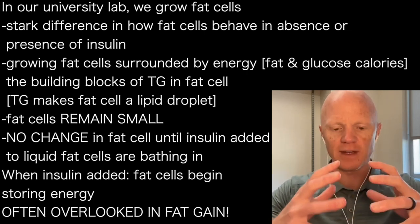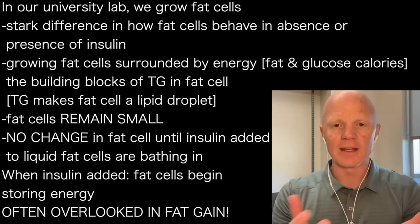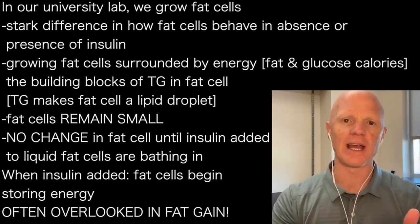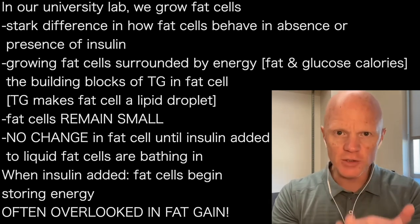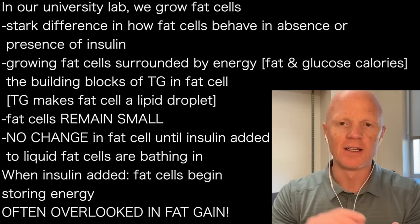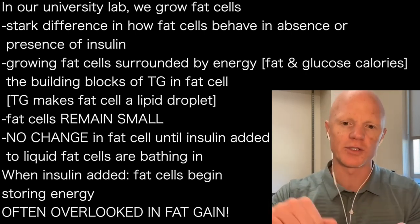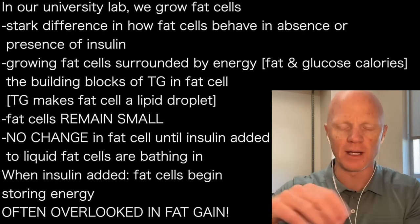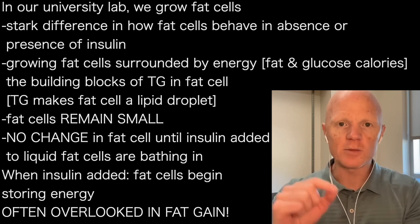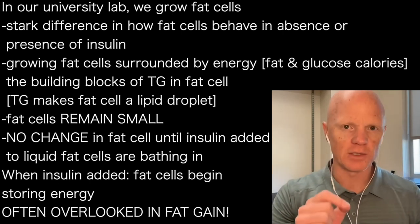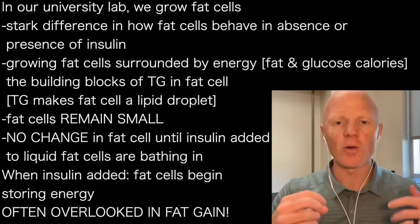The triglycerides give the fat cell its big fat blob, or what we call a lipid droplet. The fat cells are surrounded by an abundance of energy, and yet they remain small. There are no changes on those fat cells until we start sprinkling insulin into the culture medium — the liquid the cells are bathing in. Once we add insulin, now the fat cells know what to do, which is store the energy. That's a part that is so often overlooked.